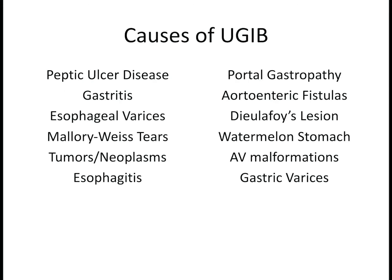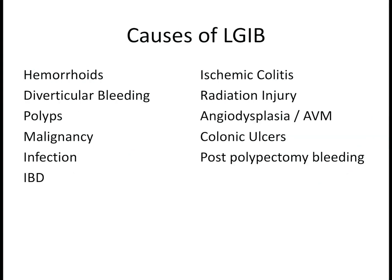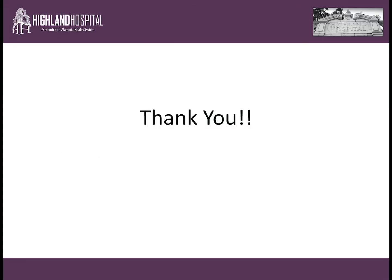Some basic causes of upper GI bleeding include peptic ulcer disease, gastritis, Mallory-Weiss tears, tumors, and neoplasms. For lower GI bleeding, common causes include hemorrhoids, diverticular bleeding, polyps, malignancy, infection, and IBD. Thank you for listening, and hope you come back for more podcasts.